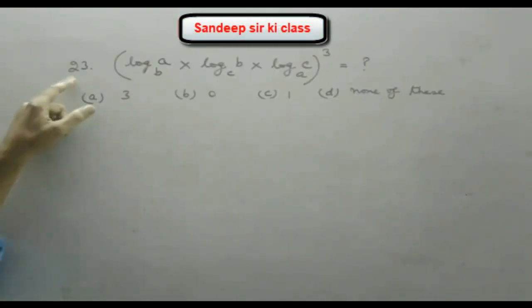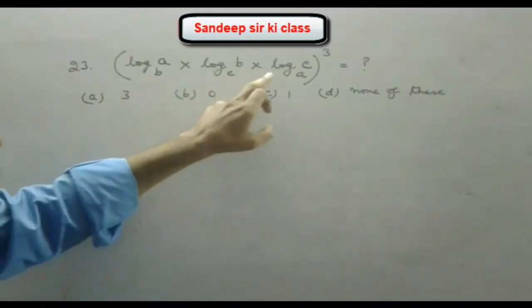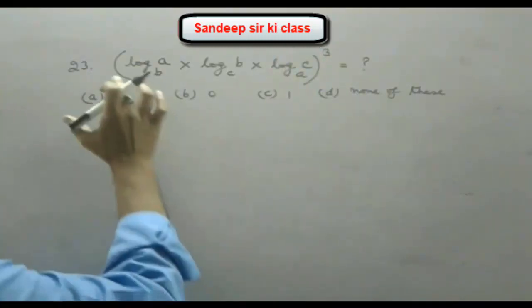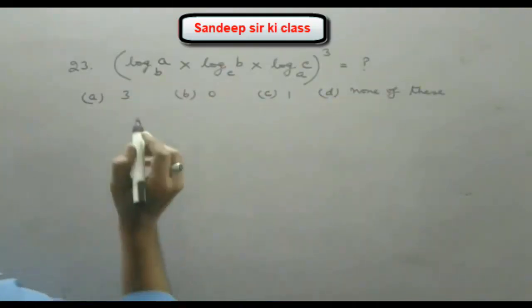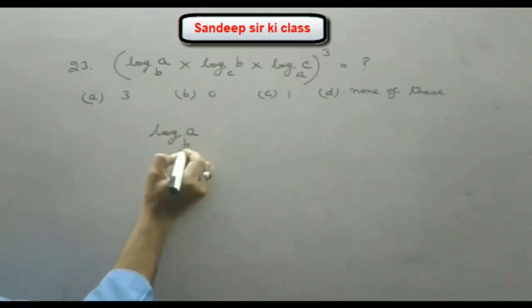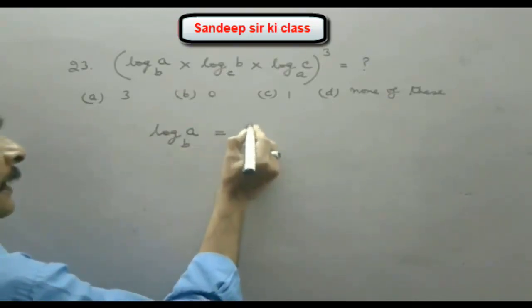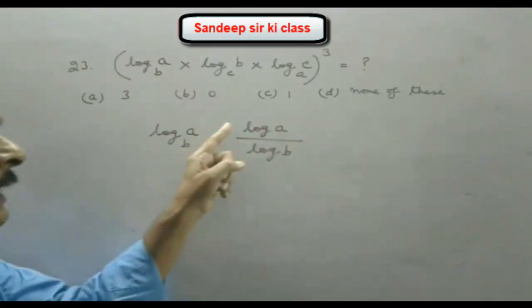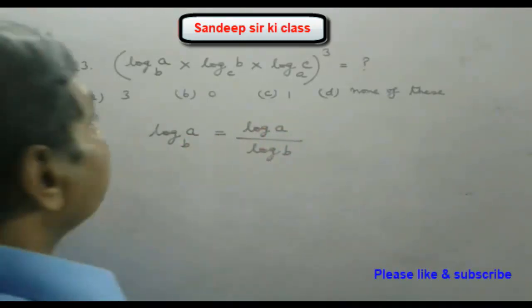Question number 23: log a to the base b, into log b to the base c, into log c to the base a, whole cube — we have to find the value. When we see the first term, log a to the base b, with the base change formula we know it can be written as log a upon log b, to any base.